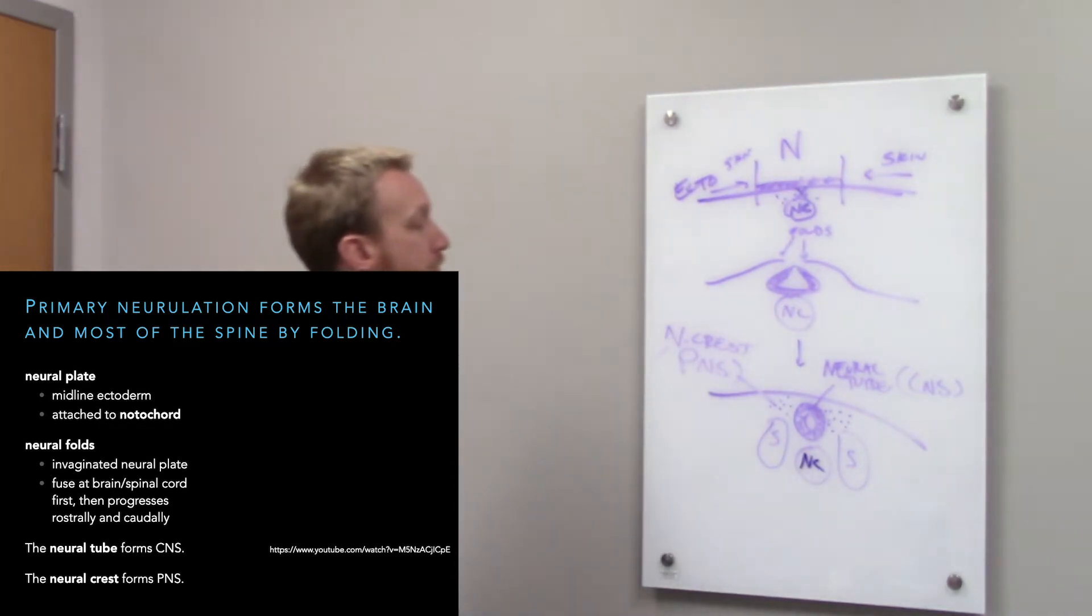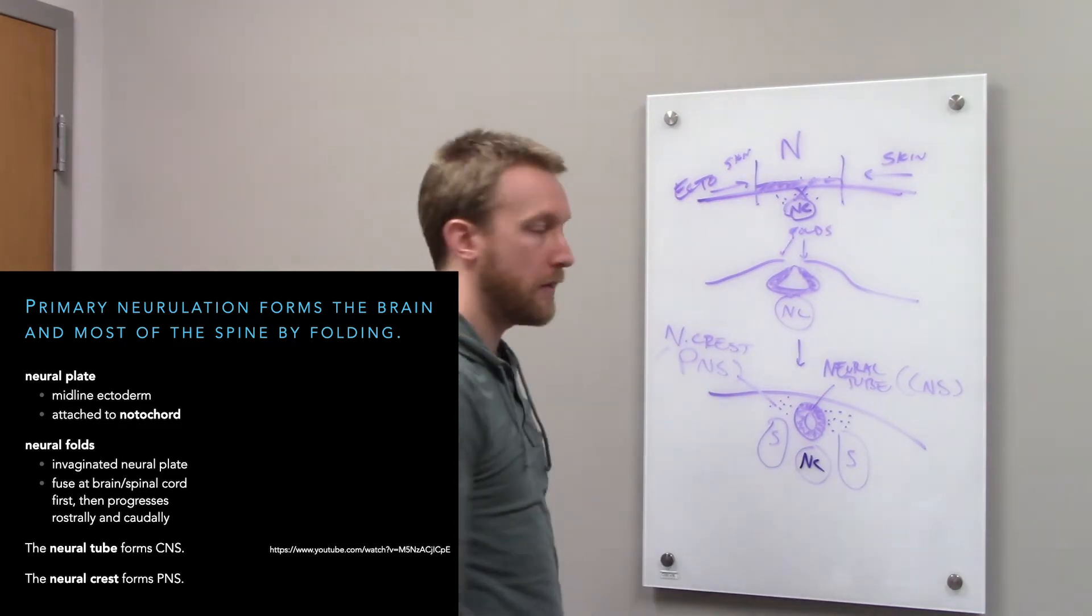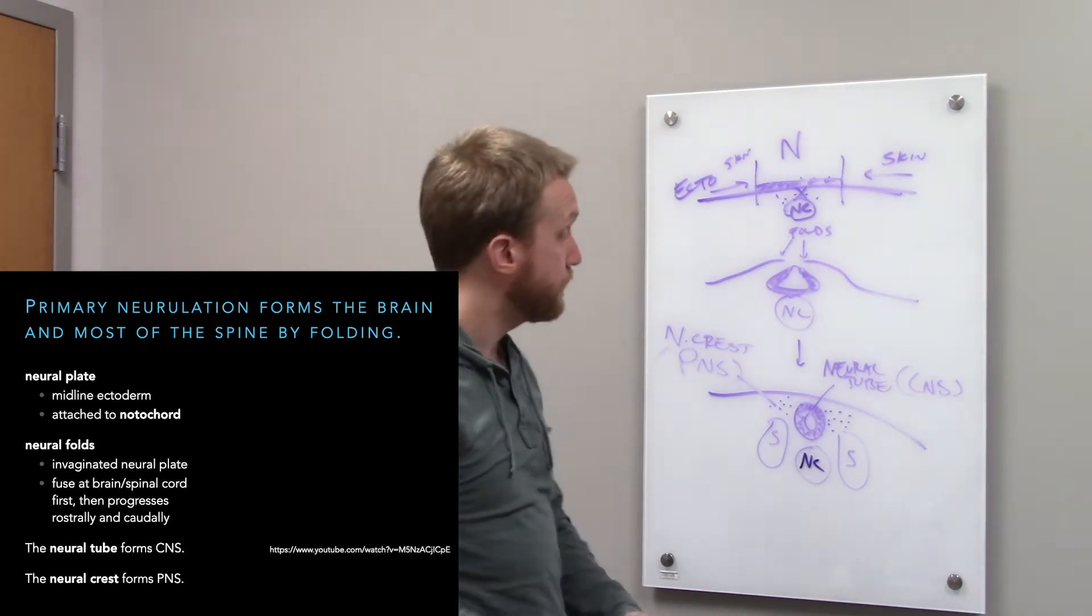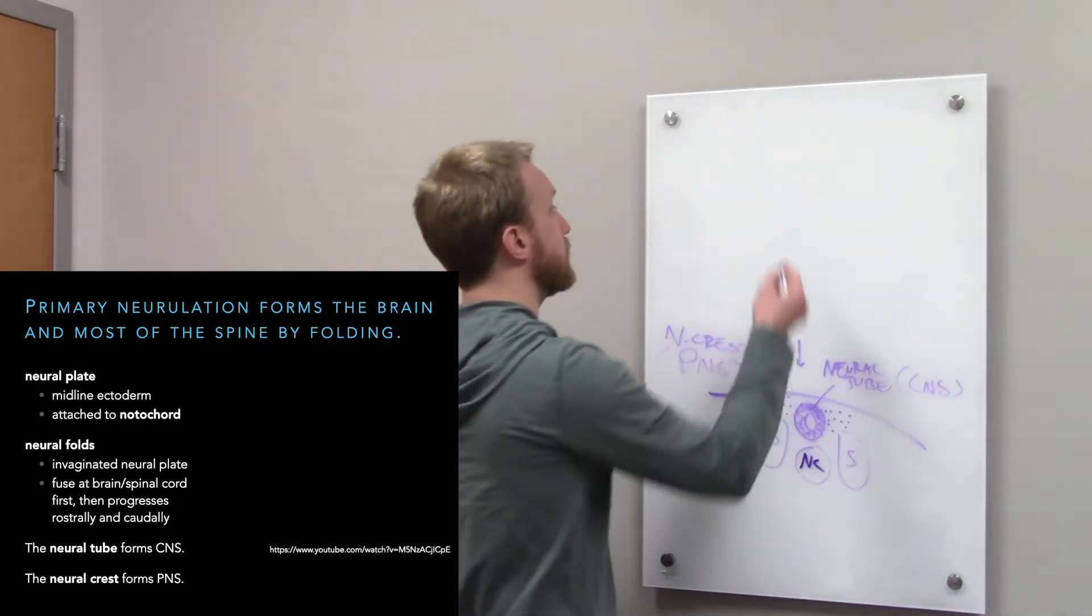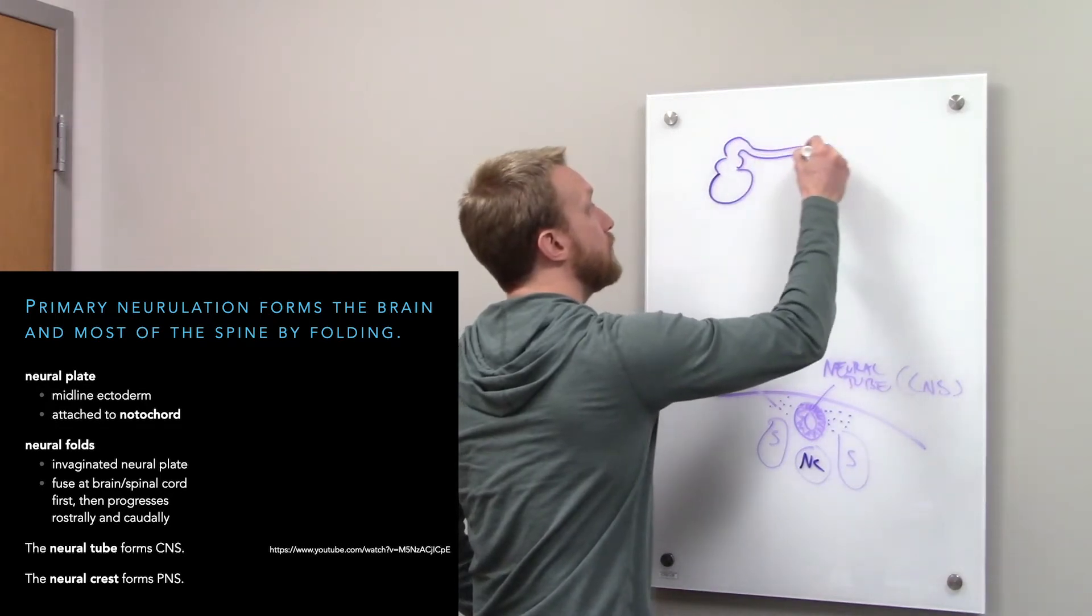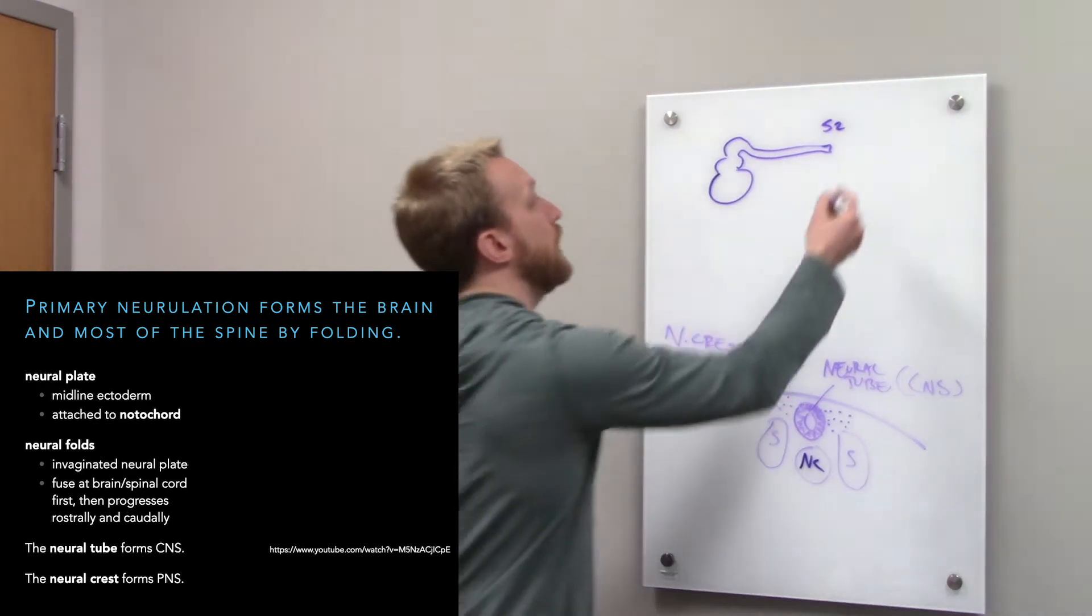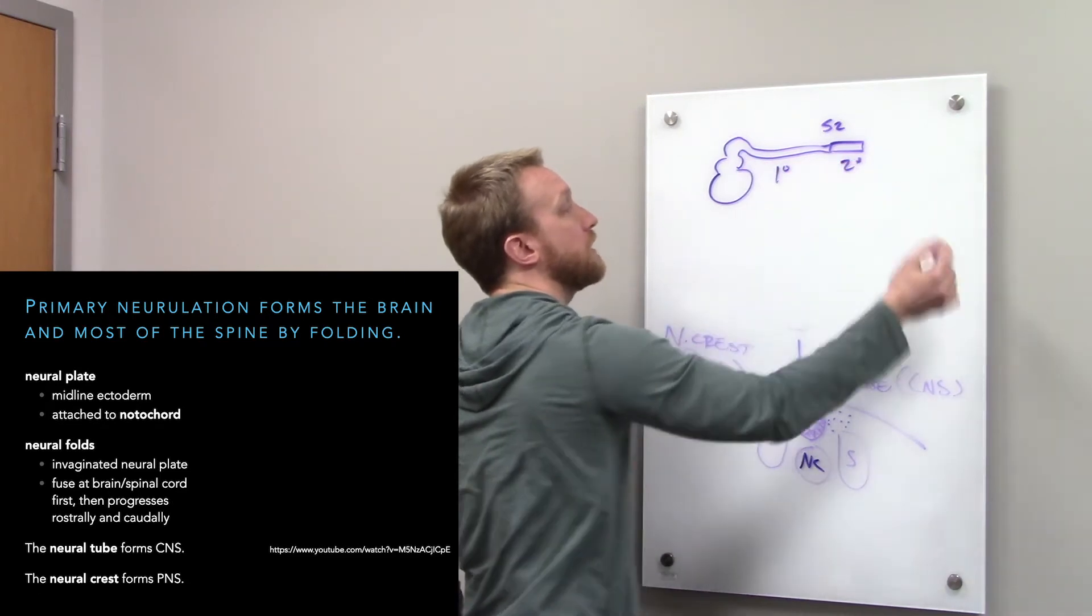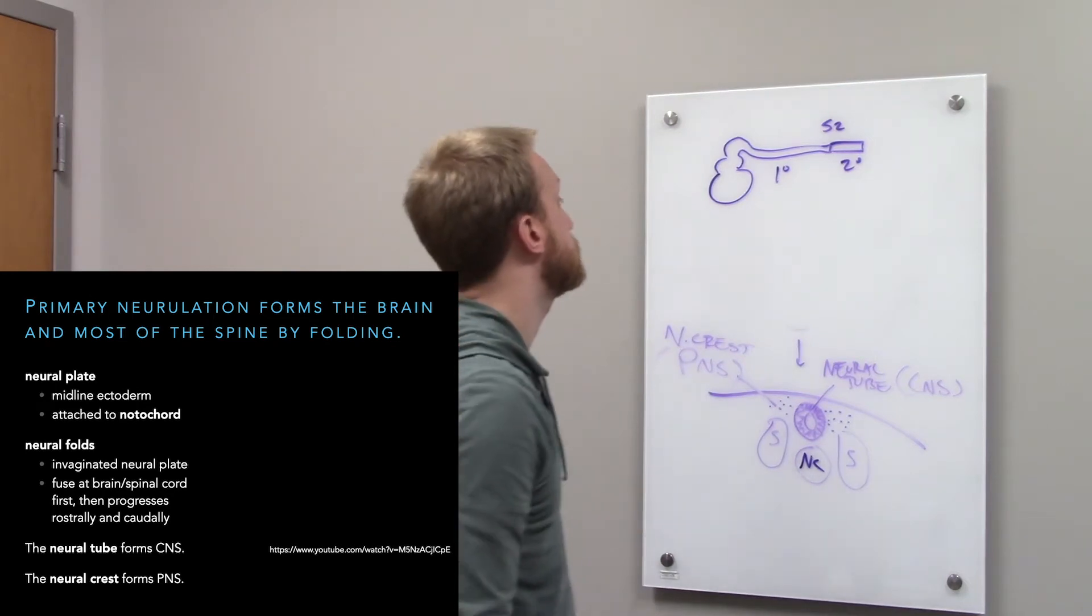The notochord is still playing a role. But that's basic primary neurulation. We're not done though. We haven't built the entire spinal cord yet. All we've done in primary neurulation is build ourselves a brain and most of the spinal cord up to around S2. The rest we're going to build through secondary neurulation. So primary over here, secondary for the very end. There's a couple of sacral and then a coccygeal segment we've got to add on.